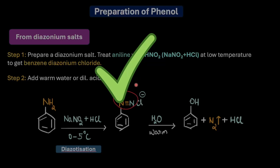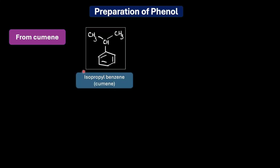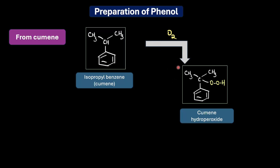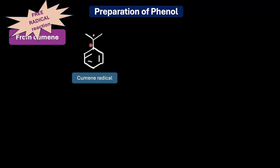Finally, let's go industrial — the primary source of phenol: the cumene process. Cumene, also called isopropylbenzene, is first oxidized in air to form cumene hydroperoxide, which is then treated with dilute acid to give phenol and the commercially important chemical acetone. This reaction has a free radical mechanism, starting with an initiation step where cumene reacts with oxygen at higher temperature to give a cumene radical. The hydrogen on the isopropyl group is easily removed; a small amount of radical initiator is sometimes added to speed up initiation.